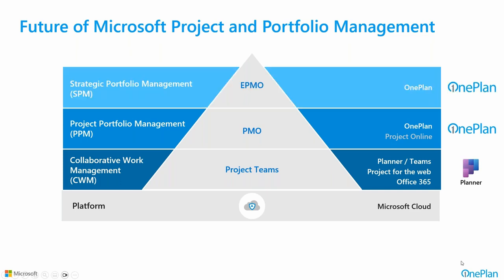Analysts like Gartner talk about a new realm called strategic portfolio management, or SPM — elevating organizations to an enterprise PMO focus for enterprise-wide transformations. This requires visibility across all aspects of the business to ensure strategic alignment with where leadership wants to go. There may be product portfolios, application portfolios, business capability portfolios, or value streams that all need to align. OnePlan provides full SPM capabilities tied into the Microsoft Cloud and tools.